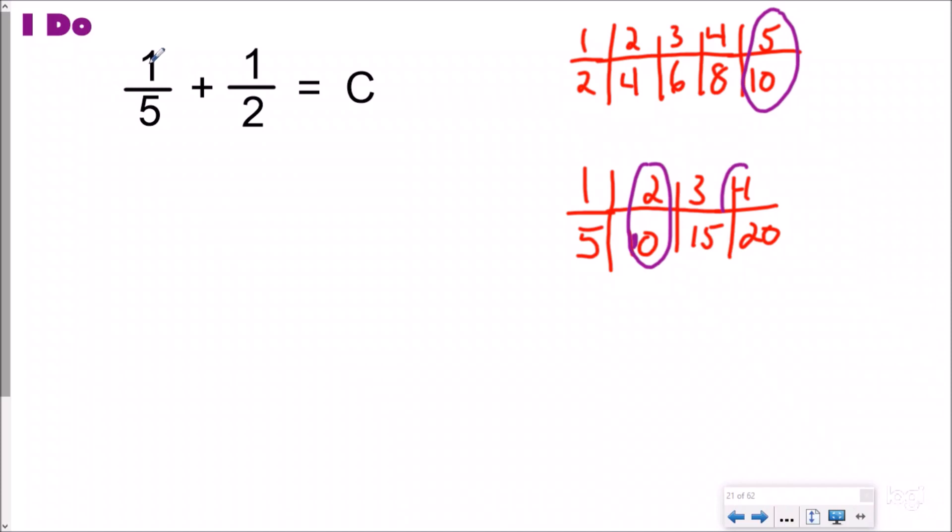And now I'm going to just simply rewrite those underneath. So one-fifth became two tenths, one-half became five tenths, and now when I add those together I add my numerators, my denominators stay the same, and my answer is seven tenths,